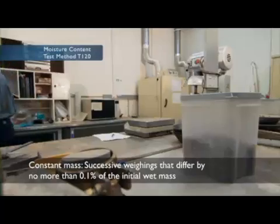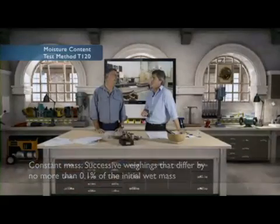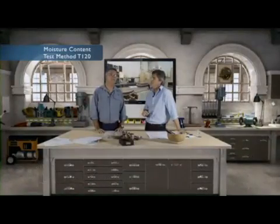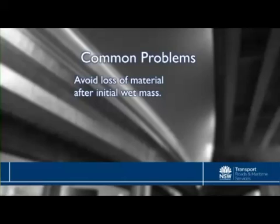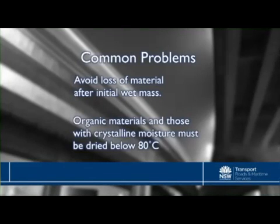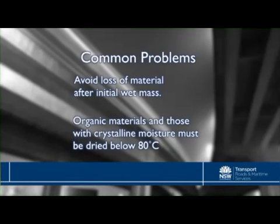So what kind of things do we need to look out for? There are a couple of things, and the main one is we have to be very careful not to lose any material after we have weighed our initial wet mass. Also, some materials that have organic material or crystalline moisture such as gypsum must be dried in an oven at a lower temperature, no more than 80 degrees C.